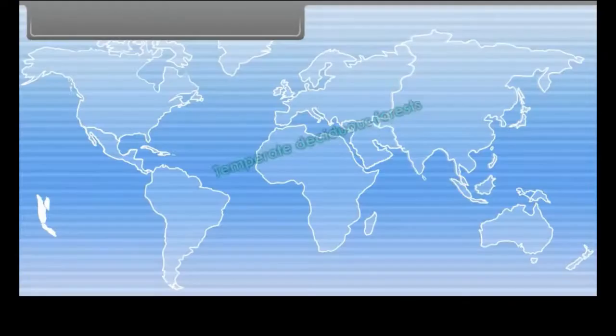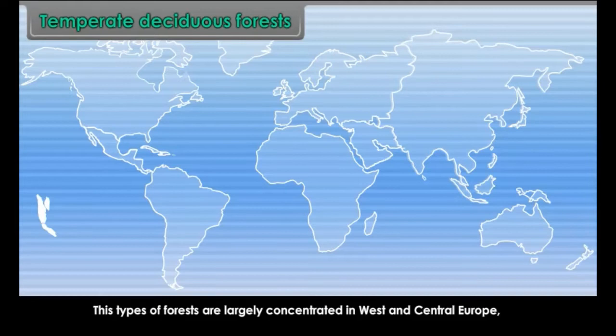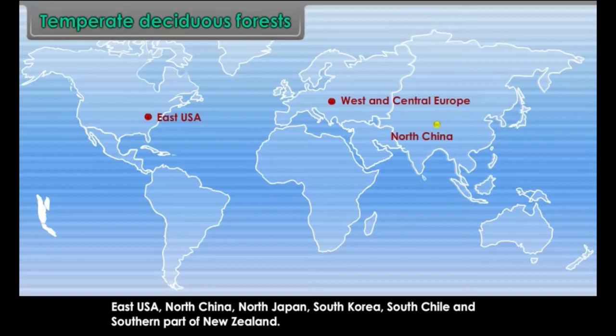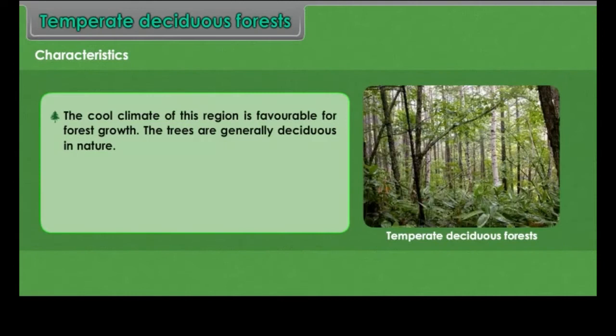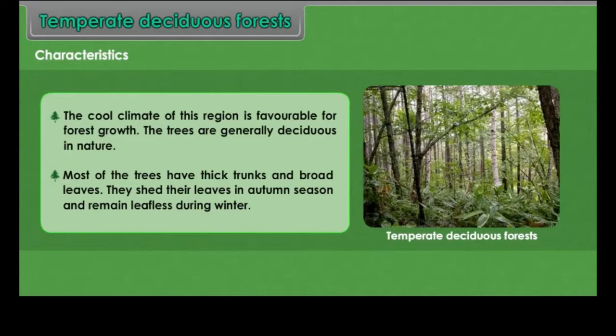Temperate deciduous forests are largely concentrated in West and Central Europe, East USA, North China, North Japan, South Korea, South Chile and the southern part of New Zealand. Characteristics: The cool climate of this region is favourable for forest growth. The trees are generally deciduous in nature, with thick trunks and broad leaves. They shed their leaves in autumn and remain leafless during winter.